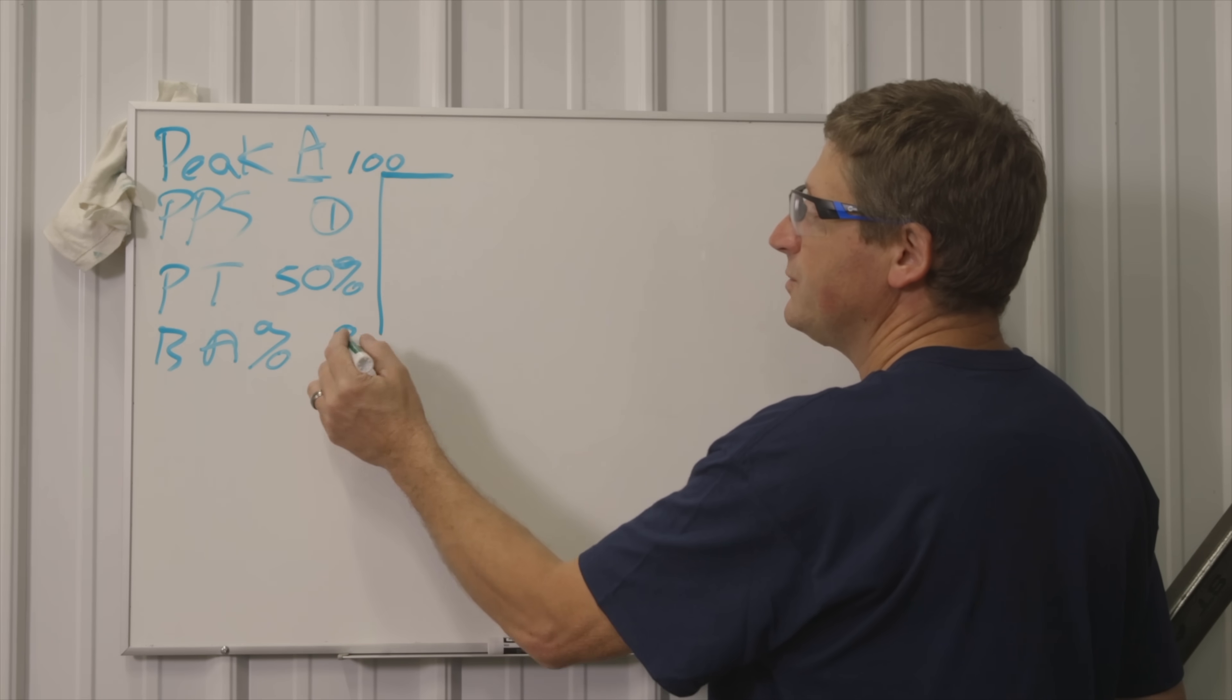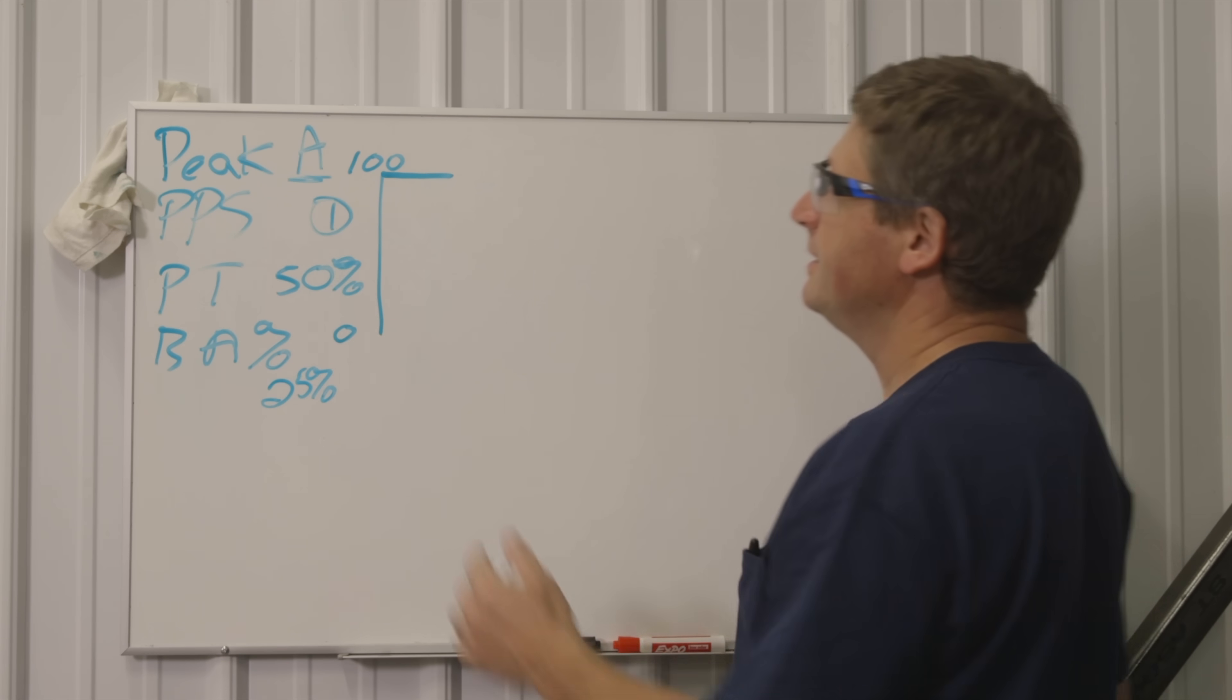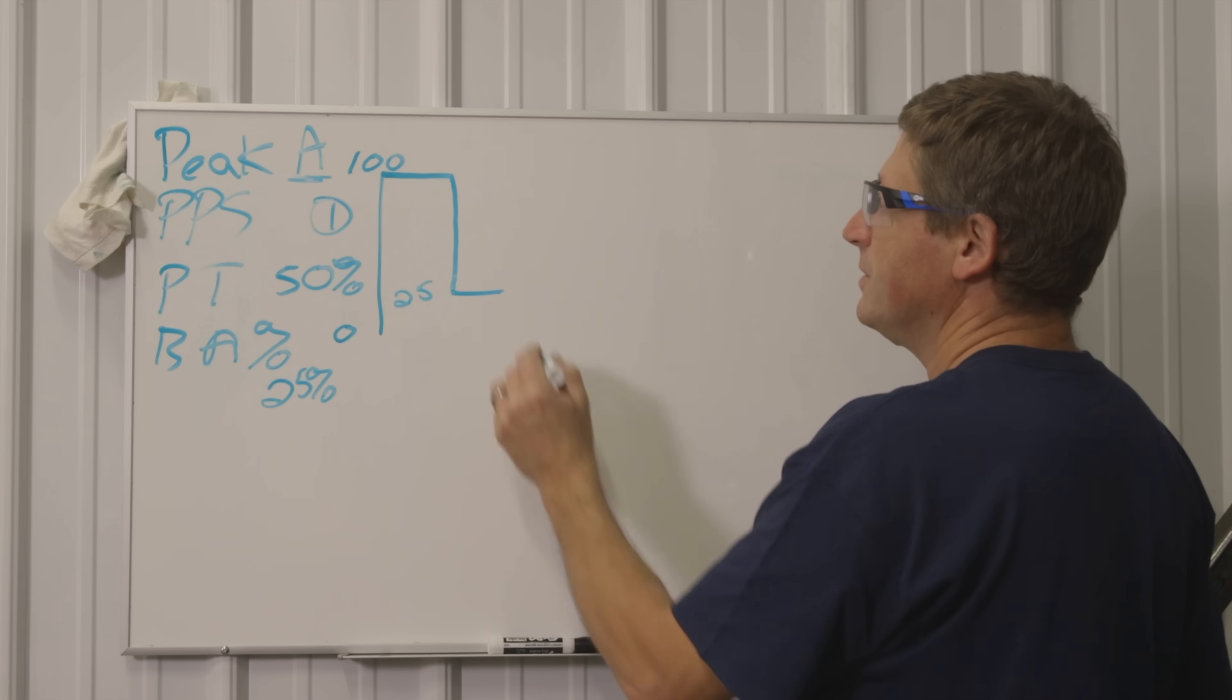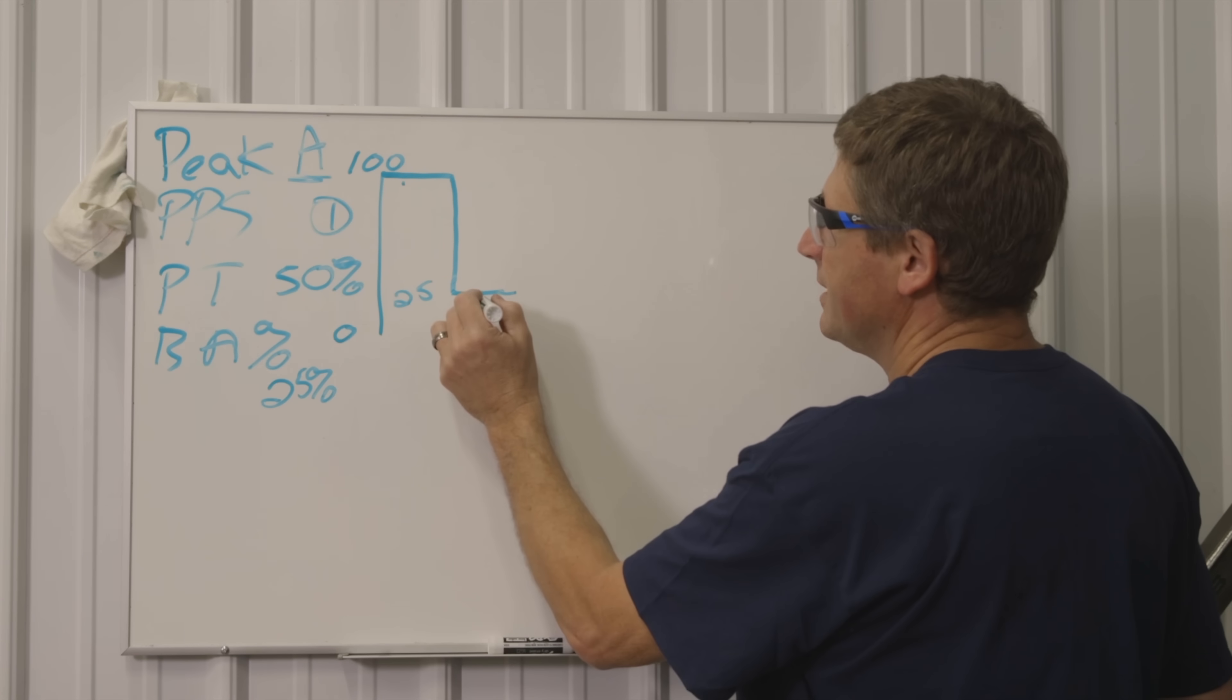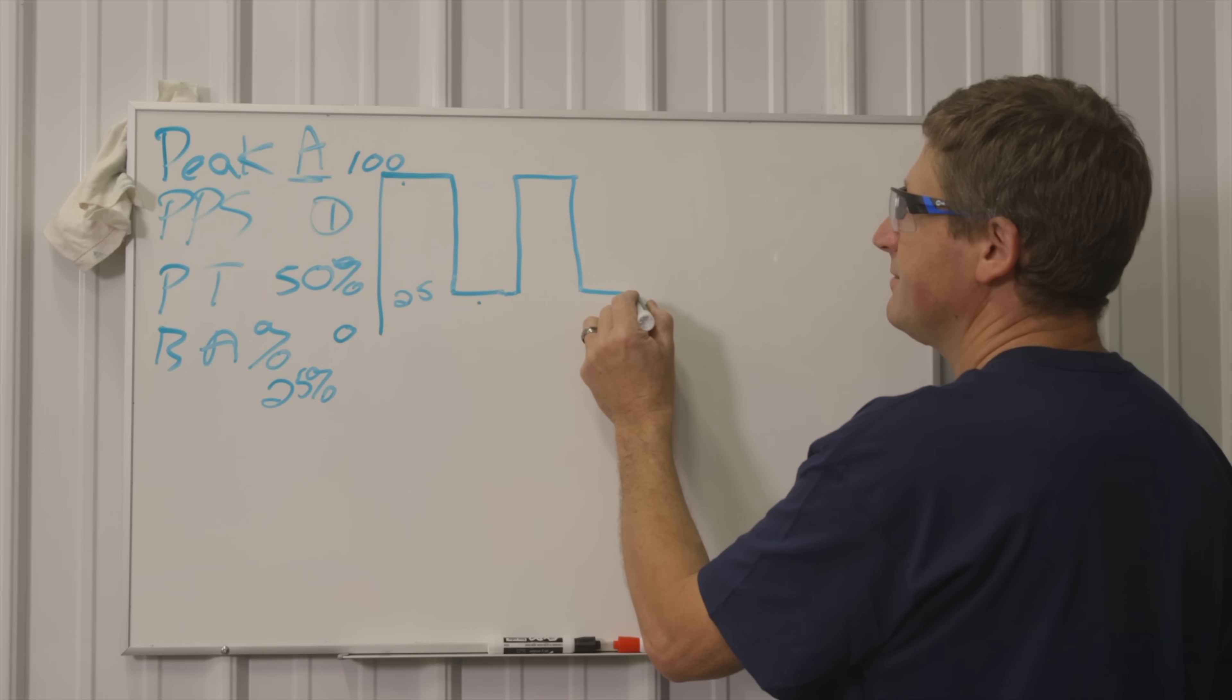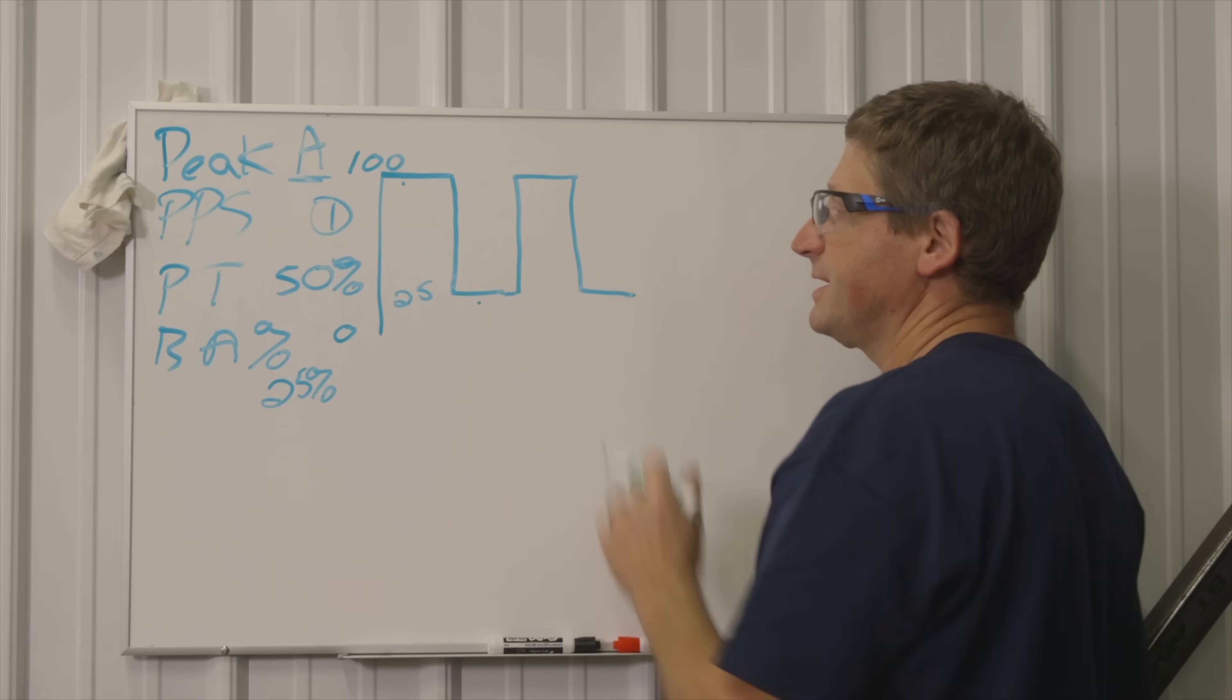Then it's going to go down to a background setting. Now that background percentage let's call that 25 percent just to make my math easy. So that's going to go down to 25 amps. So it's going to repeat that. For a half a second it's at 100 amps, for the other half a second it's at 25. Then it's going to repeat that cycle again. So it's going to keep repeating that, half a second on, half a second off.